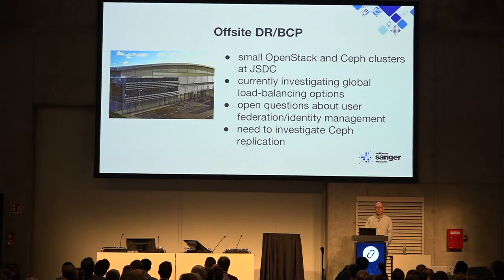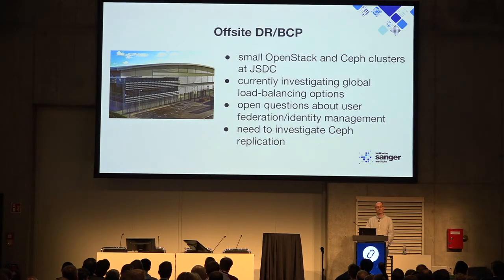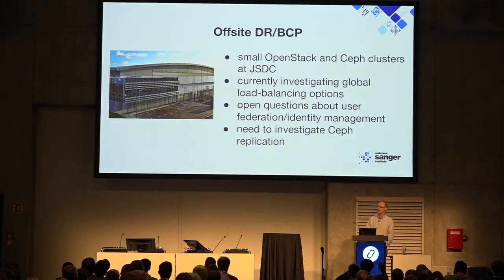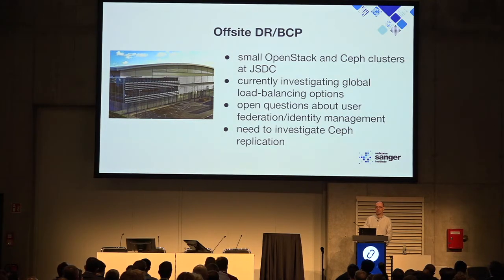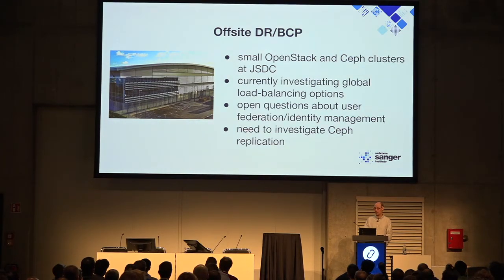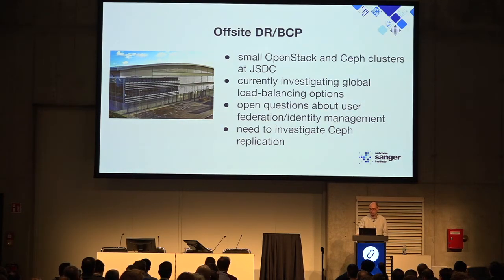Our OpenStack is in some ways a victim of its own success — we had a corridor conversation to discover someone was running a tier-one vital external-facing service on it without telling us. So we're looking at disaster recovery and business continuity. We've got small OpenStack and Ceph clusters at the Janet Shared Data Centre in Slough, and we're looking at global load balancing — active-active or active-standby. We still don't know what to do about identity management or federation: run a second Keystone, copy the database, use cells? If you've done something like this, come and talk to me.